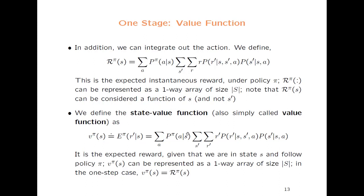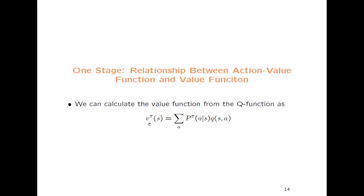We can define the state value function — also simply called the value function. We have the value function, the Q-function, and it's the expected reward under the policy π. In this one-stage case it turns out to be the same as the reward function just defined, though in general it's more complicated. In the situation where we always have a policy in place, we can calculate the value function from the Q-function by multiplying the Q-function by the policy and integrating over all actions.